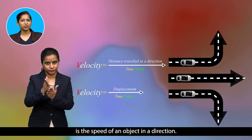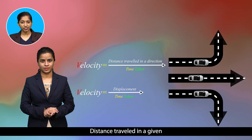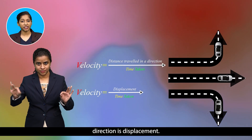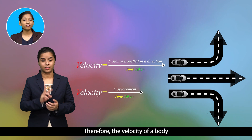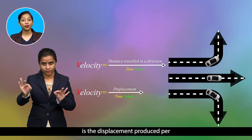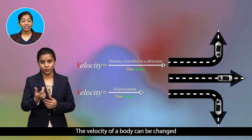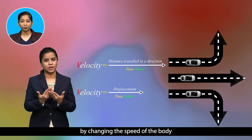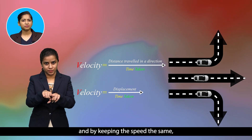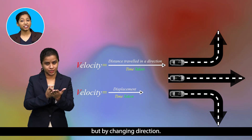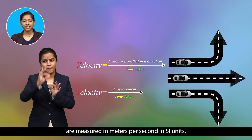Velocity is the speed of an object in a direction. Distance traveled in a given direction is displacement. Therefore, the velocity of a body is the displacement produced per unit of time. The velocity of a body can be changed by changing the speed of the body, or by keeping the speed the same but changing direction. Both speed and velocity are measured in meters per second in SI units.